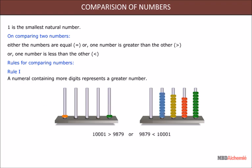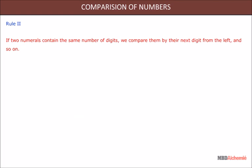1001 is greater than 987, or 987 is less than 1001. Rule 2: If two numerals contain the same number of digits, we compare them by their next digit from the left and so on. Examples are shown below with their place values.